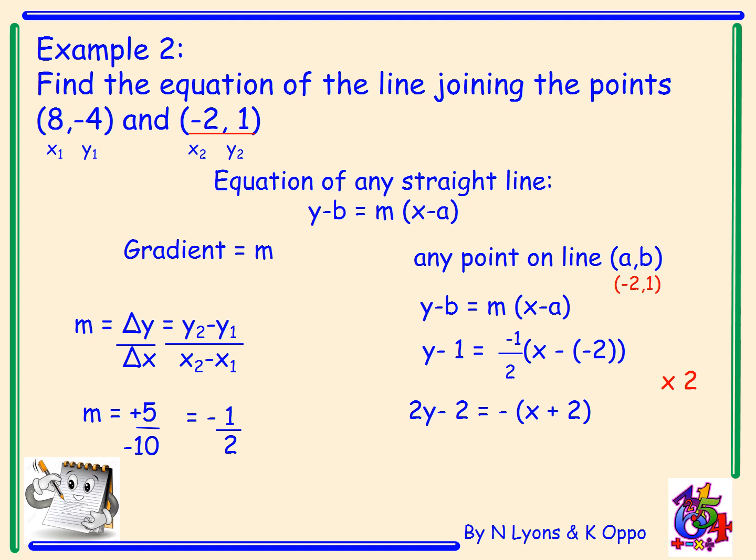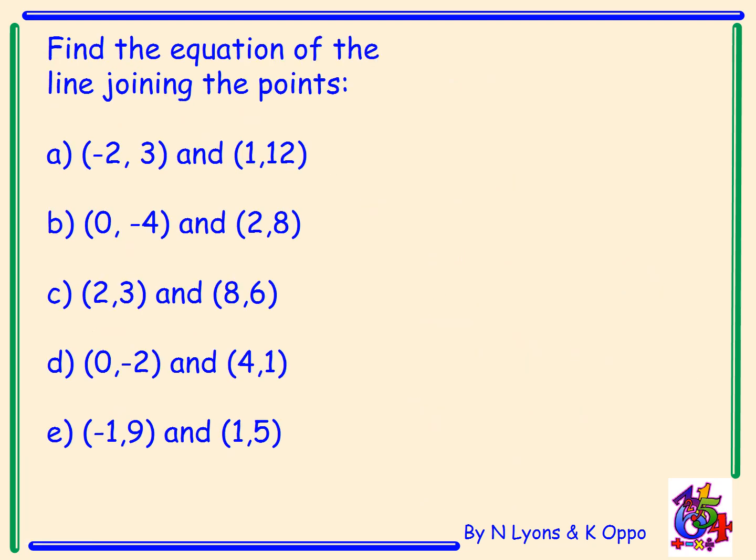Now I'm going to multiply out the bracket by the negative one and rearrange into the form ax plus by equals c. So I've got 2y minus 2 equals negative x minus two. And now I can rearrange. I've got x plus 2y equals zero. And that's the equation of my straight line. Now remember, left hand side's got a note taking symbol, so you're expected to copy down this as a note.